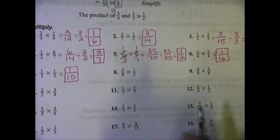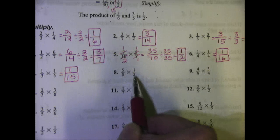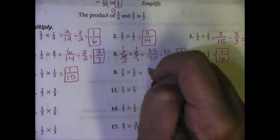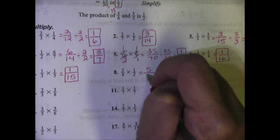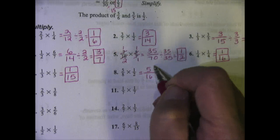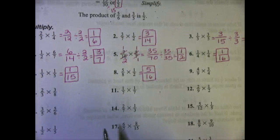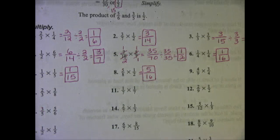Number 8, 5/8 times 1/2. I can't cross simplify this one. So 5 times 1 is 5, 8 times 2 is 16. When I find that I cannot cross simplify before multiplying, that tells me that I'm not going to have to simplify after I multiply.